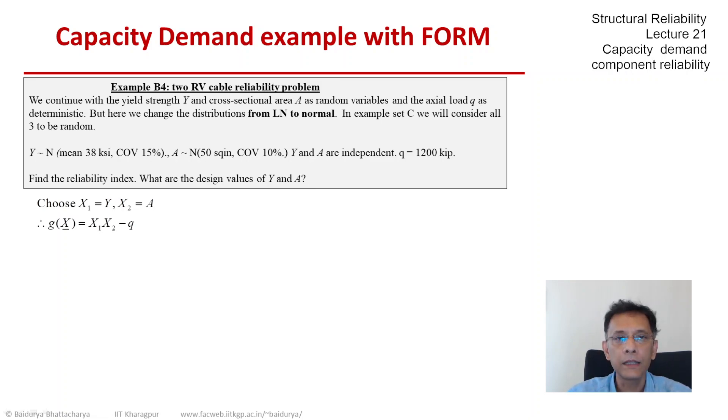So let us just do a simple Hassofer-Lind transformation of X1 and X2, X1 being Y itself and X2 being A. With the second moment transformation, our limit state in U space becomes a non-linear function. The constants come from the mean and standard deviations of Y and A.